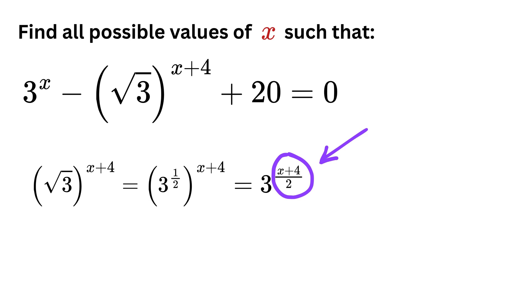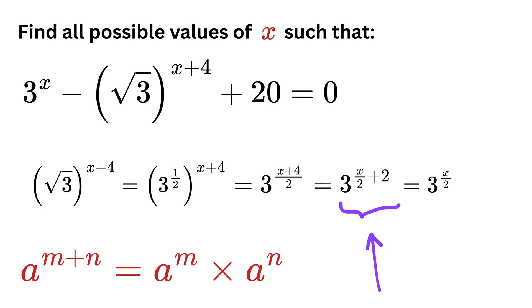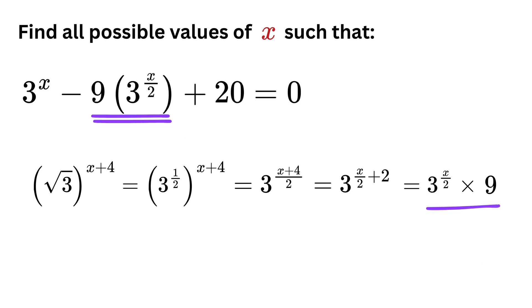Now x plus 4 divided by 2 can be split as x divided by 2 plus 4 over 2, or x over 2 plus 2. Let us break this expression further using another power rule: if we have a raised to m plus n, it becomes a raised to m multiplied by a raised to n. So we now write this as 3 raised to x divided by 2 multiplied by 3 raised to 2. 3 raised to 2 is just 9, so this becomes 9 times 3 raised to x divided by 2.